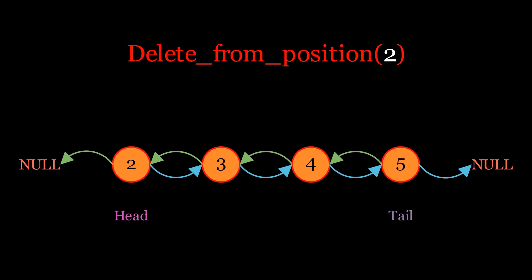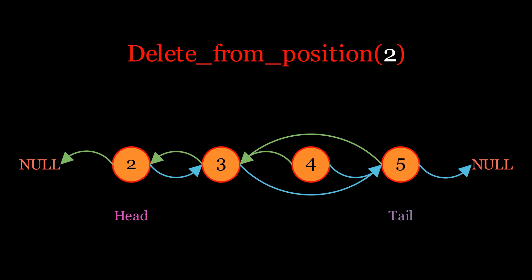To delete an element from a specific position in a doubly linked list, such as the node with value 4, first traverse the list to reach that node. Once there, update the next pointer of its previous node to skip over the node being deleted and point to the node after it. Similarly, update the previous pointer of the node after the deleted one to point to the previous node. This maintains the links between remaining nodes. This is a linear time operation because traversal to the target position is required.